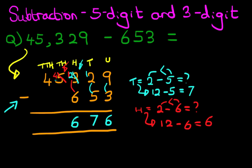We've now got the thousands column. We've got 4. 4 minus 0 is 4. Ten thousands, we've got 4 minus 0 is, well, it's the same, it's 4. And we have our answer. 45,329 minus 653 is 44,676. That is correct. So let's give it a nice big tick. And that is how we do subtraction of a 5-digit and a 3-digit number using the vertical format.